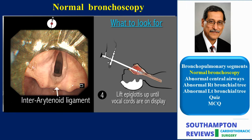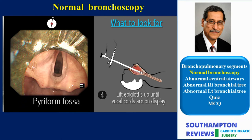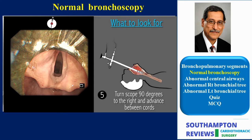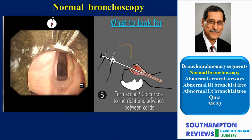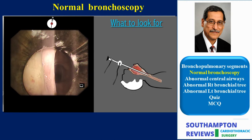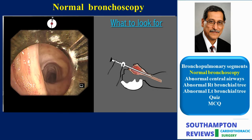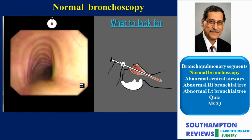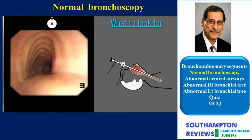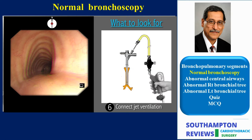Here are some anatomical landmarks to help you describe anomalies to your ENT colleagues. With good muscle relaxation, the cords are seen to be abducted away from the median line and stationary. The rigid scope is then turned 90 degrees to the right before introducing it via the cords. This manoeuvre aligns the shortest diameter of the tip of the scope transversely to avoid damage to the cords.